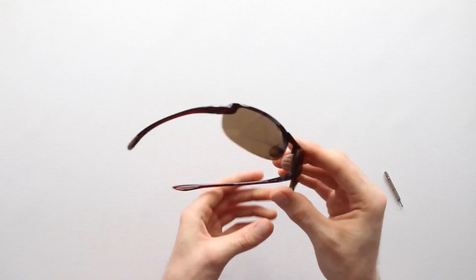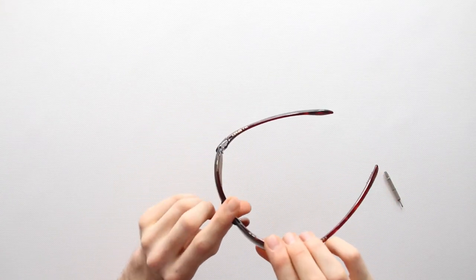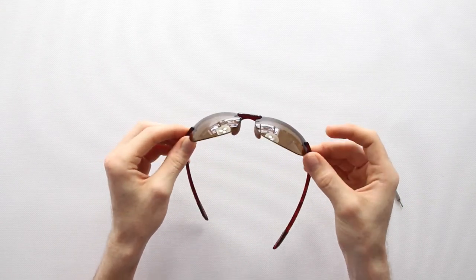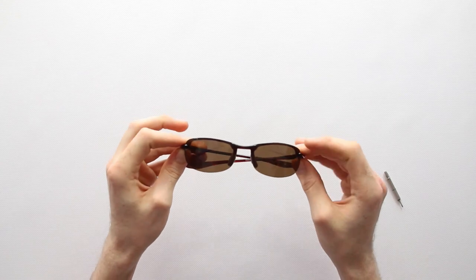Do a final safety test by applying some pressure on the lenses to affirm that they are secure. The sunglass fix recommends that you use a bit of nail polish on the screws to be absolutely sure that they will not loosen.